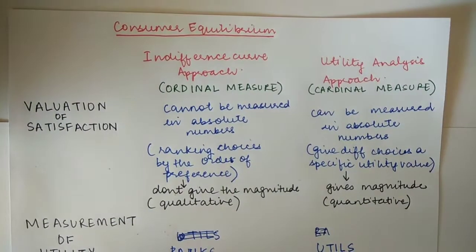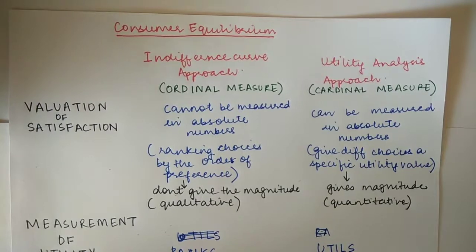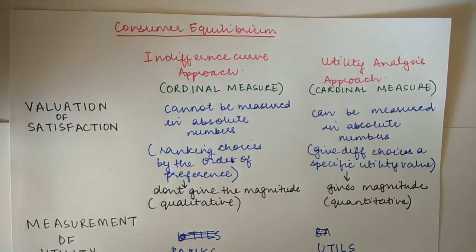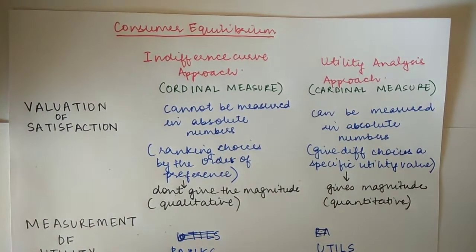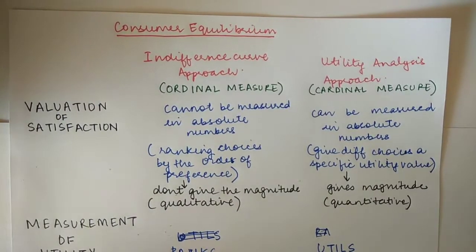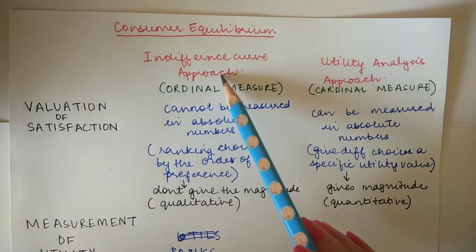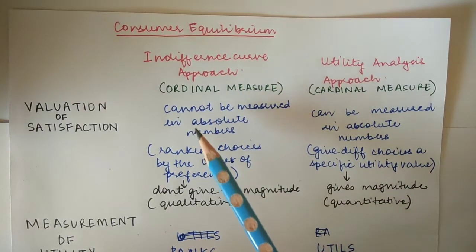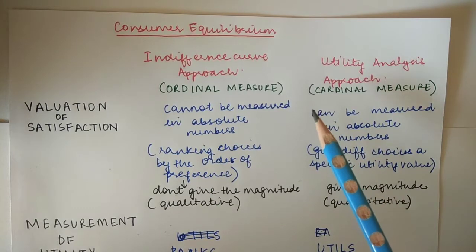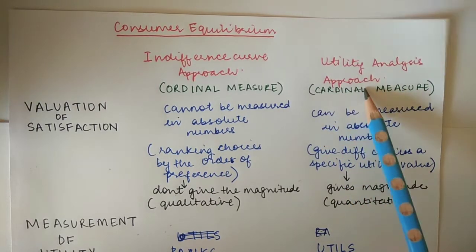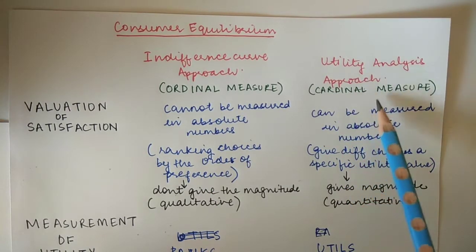In this lecture we will cover the difference between the indifference curves approach and the utility analysis approach. We have discussed these approaches in previous lectures in detail. Now we are studying the main differences between them. The consumer equilibrium through the indifference curve approach is given by Dr. J.R. Hicks and Allen, and the consumer equilibrium through the utility analysis approach is given by Marshall.